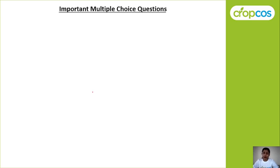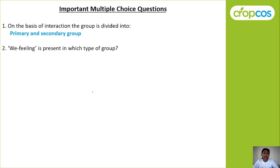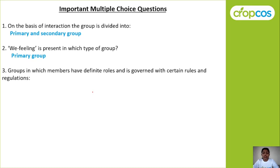Now let us discuss a few important multiple choice questions. First question: on the basis of interaction, the group is divided into — this we read first in types of groups — the answer is primary and secondary group. Second: 'we feeling' is present in which type of group? — it is present in the primary group. These answers are based on the previous video, Session 3 Part 1.